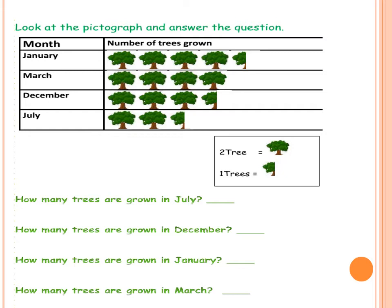Let's go to the first one to understand how to count the pictures on the pictograph. On January, we have the first tree represents 2, here is 2, then plus 2 which is 4, again plus 2, now we have 6 trees, then again we add 2, here is 8 trees. And then we have half of the tree, so this represents 1. So, in January we have 8 plus 1 equals 9.